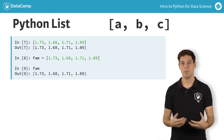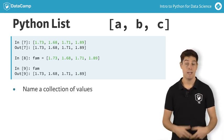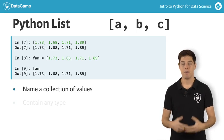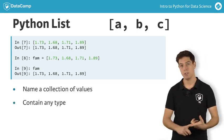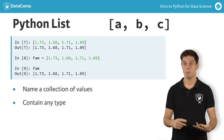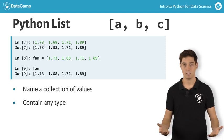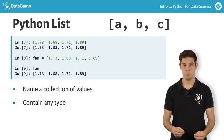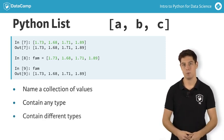A list is a way to give a single name to a collection of values. These values, or elements, can have any type. They can be floats, integers, booleans, strings, but also more advanced Python types, even lists. It's perfectly possible for a list to contain different types as well.